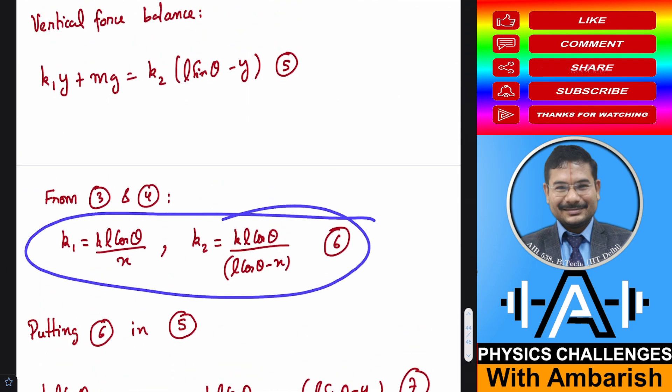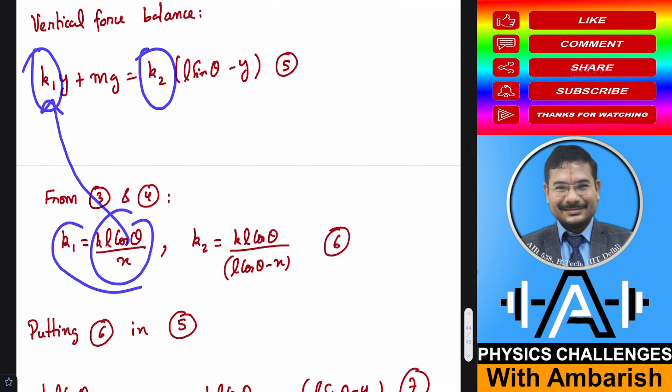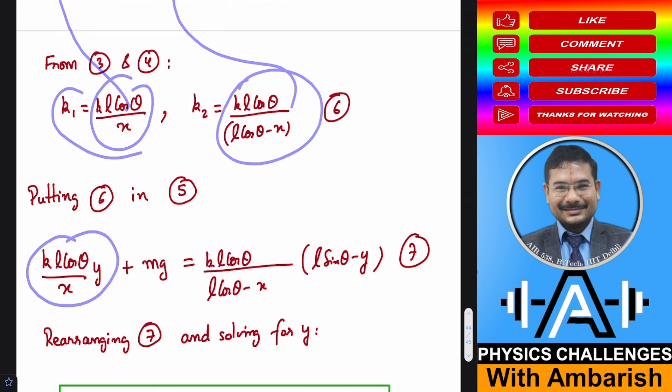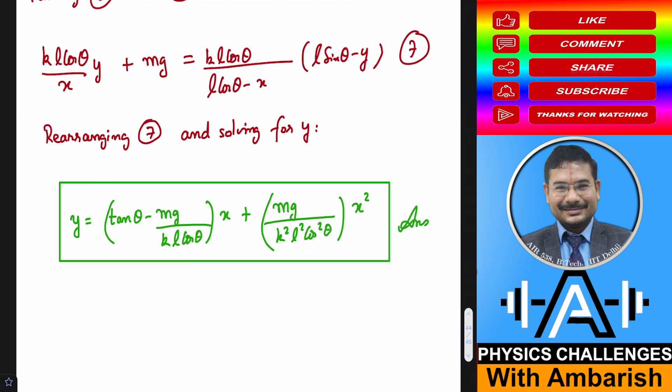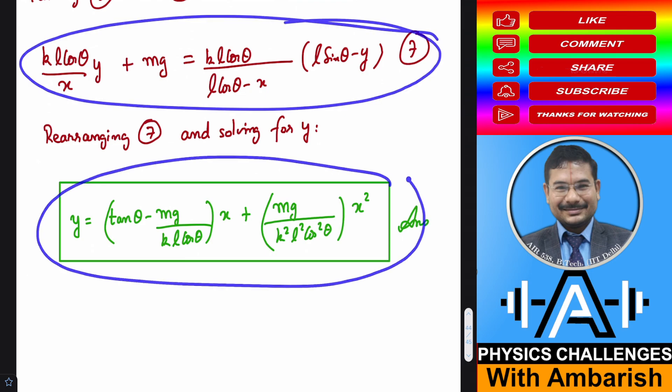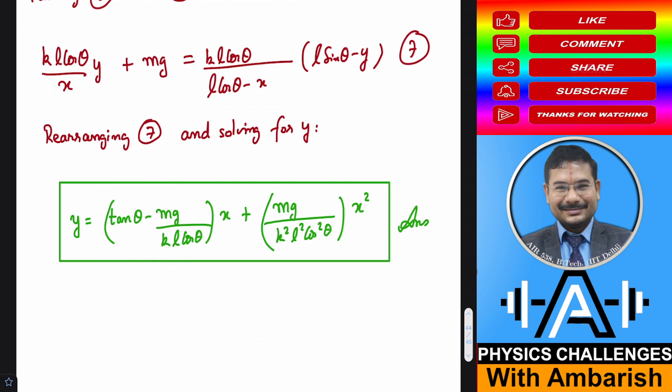Now I can put this K1 and K2 in equation 5. Substitute K1 as KL cos theta upon X and K2 as KL cos theta upon L cos theta minus X and put it here. You get KL cos theta by X times Y plus MG equal to KL cos theta upon L cos theta minus X into this. You can take LCM and multiply it out. You will start getting quadratic terms. There is some bulwark involved in rearranging the terms, but you will easily see you're getting a quadratic. Solving for Y, you get Y equals tan theta minus MG by KL cos theta times X plus MG upon K square L square cos square theta times X square. That's my final answer.